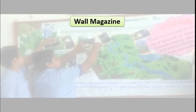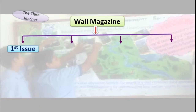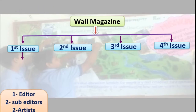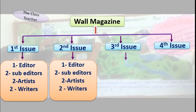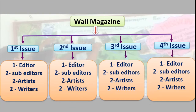Now our class teacher has prepared four teams in the class and gave four subjects. This is Wall Magazine — the subject. She distributed the class into four teams: first issue, second issue, third issue, and fourth issue. Each issue has one editor, two sub-editors, two artists, and two writers. She gave each team a subject and a fixed time of one week to prepare their magazine, and she also selected and gave a wall for each team.